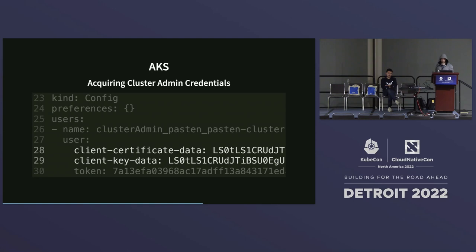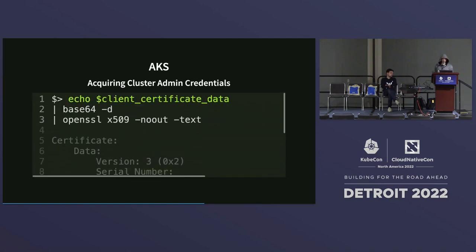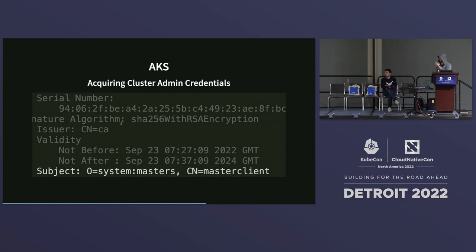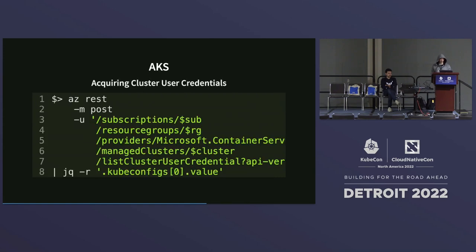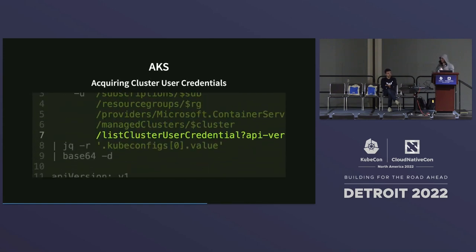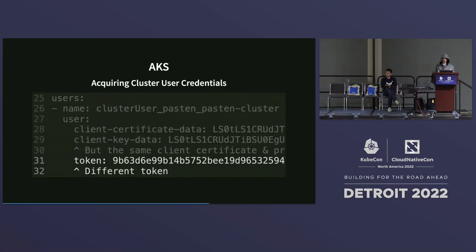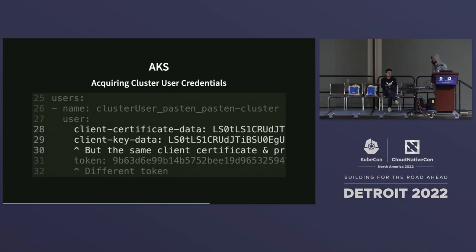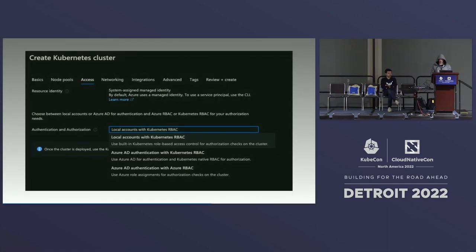In the demo using AZCLI: listing admin credentials returns a token starting with '7a' plus a client key and certificate. Opening the certificate shows organization 'system:masters' and common name 'master client'. Listing user credentials returns a different token ('9b') — but the same client certificate and private key. An attacker who gets this response can completely disregard the token, use just the client certificate and key, and gain admin privileges to your cluster.